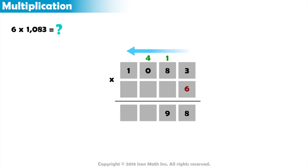Then we continue with 6 times 0 equals 0, plus the 4 in the carry equals 4. And finally, 6 times 1 equals 6. So the final answer is 6,498, which is the product of 6 and 1,083.